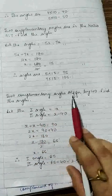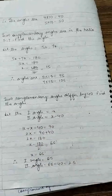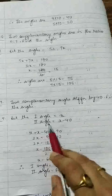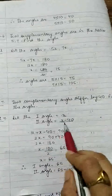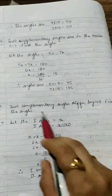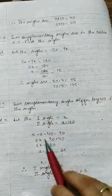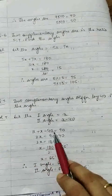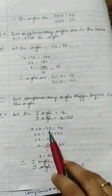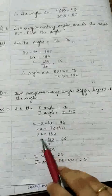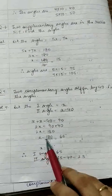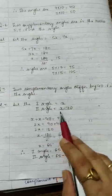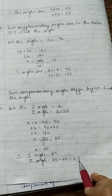Question 7: Two complementary angles differ by 40. Let the first angle be x and the second angle be x minus 40. Since they are complementary, x + (x minus 40) = 90. So 2x minus 40 = 90, giving 2x = 130, so x = 65. The first angle is 65 degrees and the second is 65 minus 40 = 25 degrees.